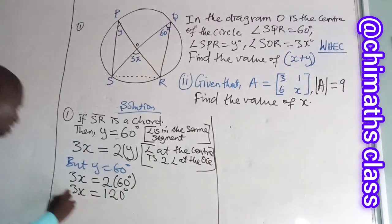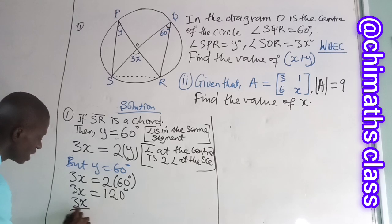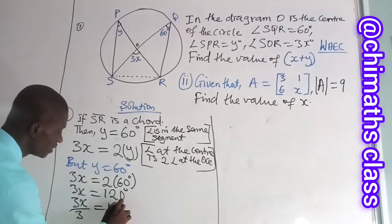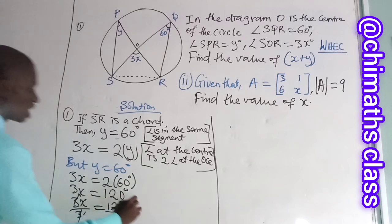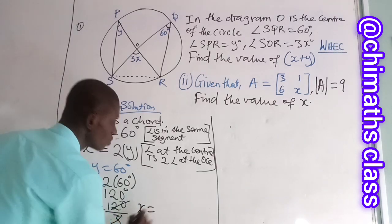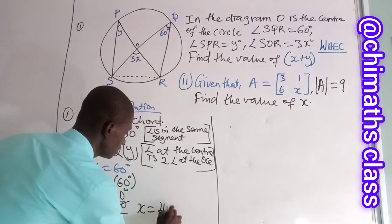Now we divide to find X. So I will divide by the coefficient of X. I have 120 divided by 3, to have that X is equal to 40 degrees.